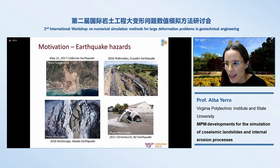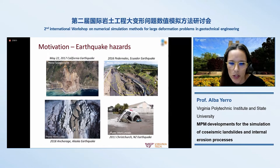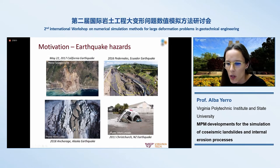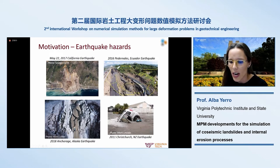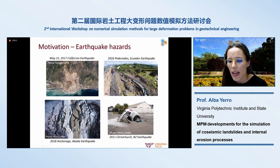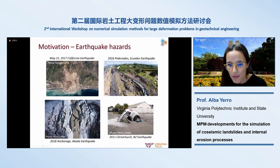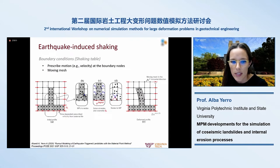Earthquakes can trigger many different types of failures and post-failure large deformation problems. The most typical include slope stability failures — natural slopes and embankments — as well as lateral spreading affecting infrastructure. There are also liquefaction problems, such as seen in Christchurch. In this presentation I will focus more on slope stability and landslide problems, but the framework we are developing should also be able to address these other types of problems.